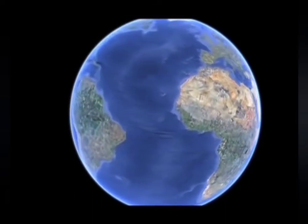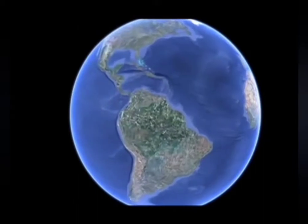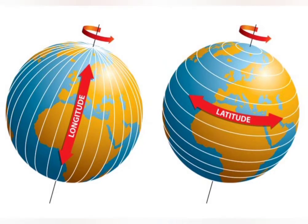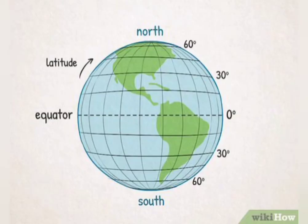A globe is a true model of the earth in a very compact form. In a globe, there is a needle called the axis. This axis of the globe passes through two extreme points known as poles — the North Pole and the South Pole. The axis is shown in the form of a needle on the globe; in reality, our earth has no such axis.